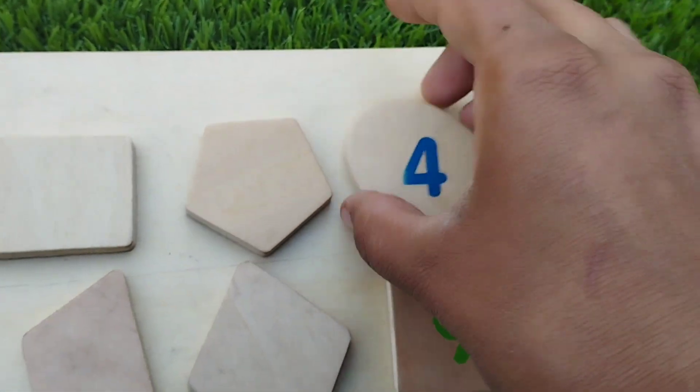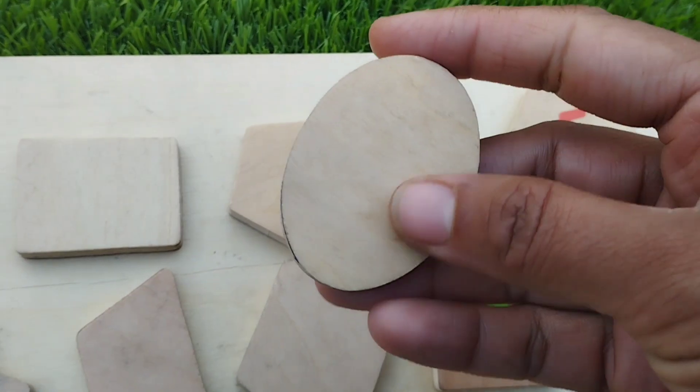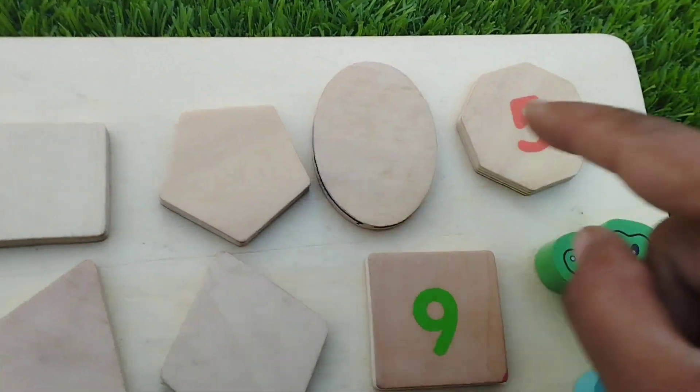The next one is oval. This is an oval shape and the number is 4.